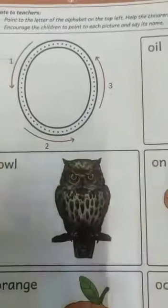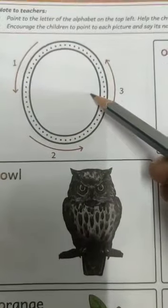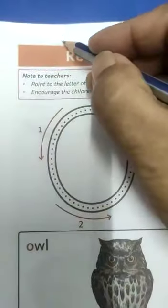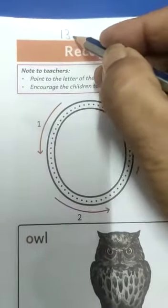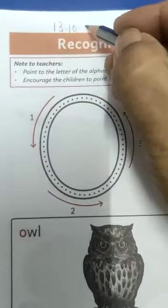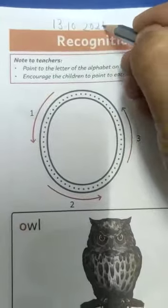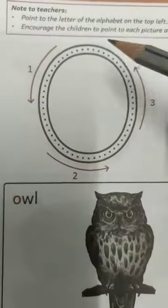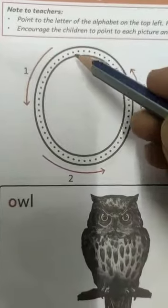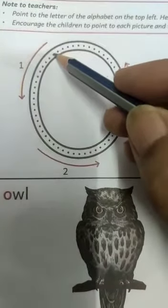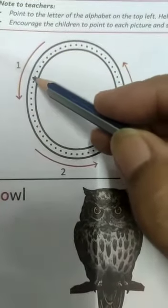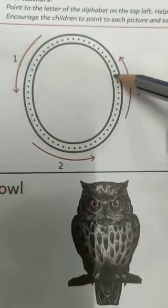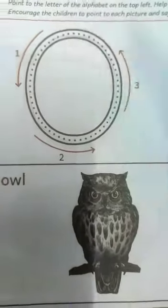This is letter O. First we will mention the date — today is 13th October 2021. Now look here how we will write letter O. Put pencil here and make a circle like this.